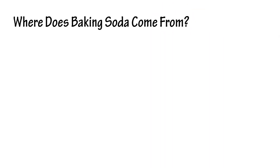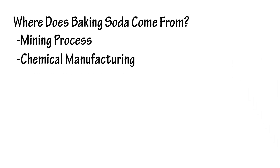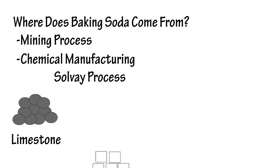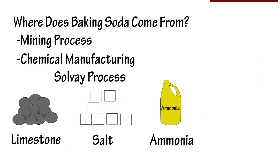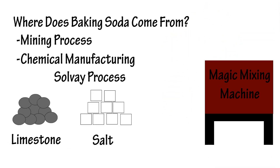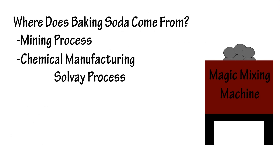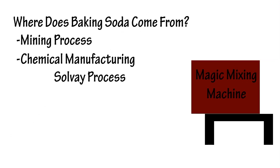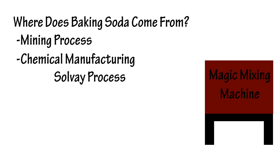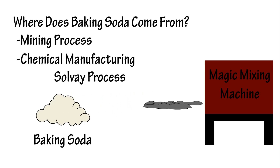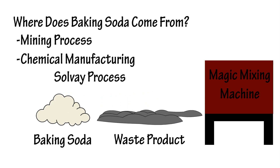Where does baking soda come from? The two ways it is made are from a mining process or chemical manufacturing. The chemical manufacturing of baking soda is known as the Solvay process and it involves using limestone, salt, and ammonia. This process produces baking soda, but also produces solid waste products that can be harmful to the environment.